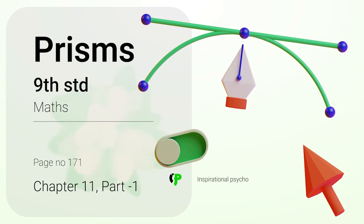Hi students, we will learn the 11th chapter on prisms. So basically, what is a prism? Today, we will learn about polygons.